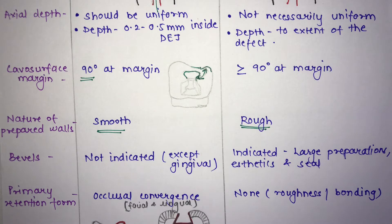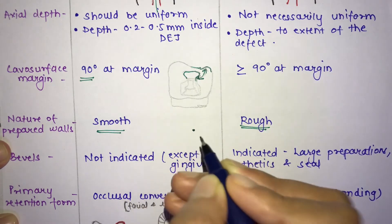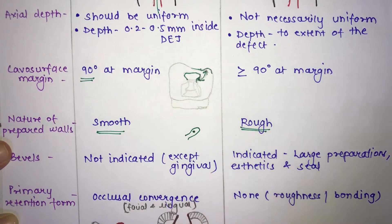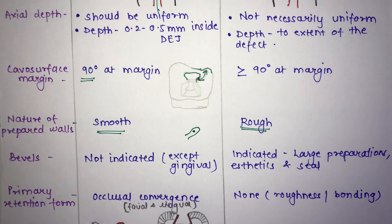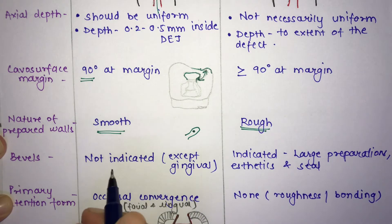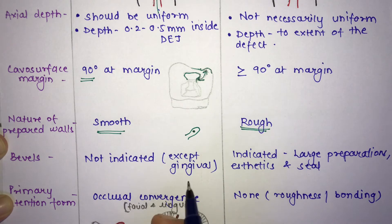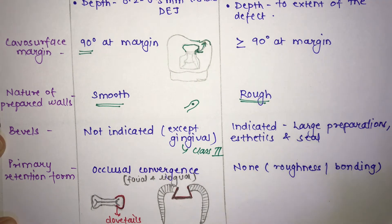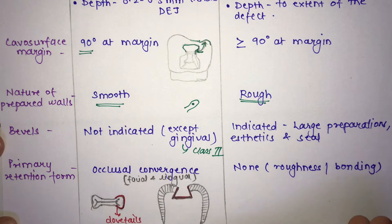The next difference is bevels — the flexible extension of the cavity preparation allowing inclusion of surface defects. In amalgam, bevels are not indicated except for the gingival bevel in class 2 preparations. In composite, bevels are indicated for large preparations to improve aesthetics and achieve a proper seal.